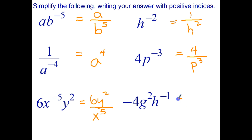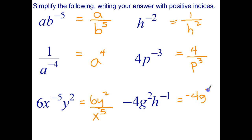And the last one: the negative 4 stays on top, the g squared stays on top, and the h to the negative 1 goes to the denominator — but we don't write the power of 1. So it's just negative 4g squared all over h.